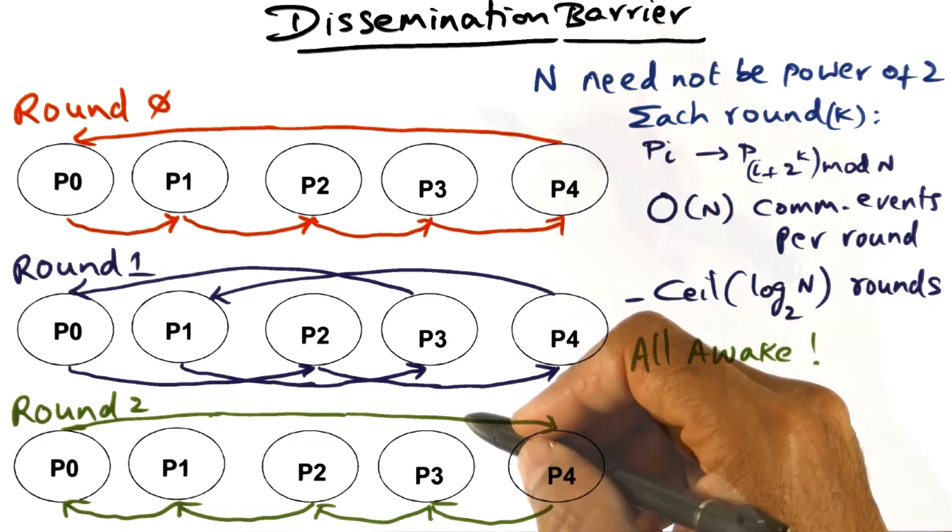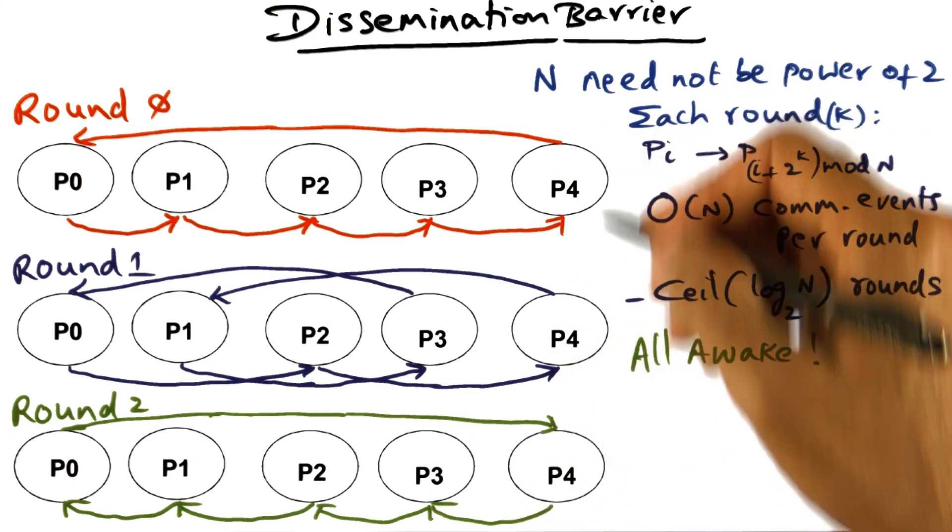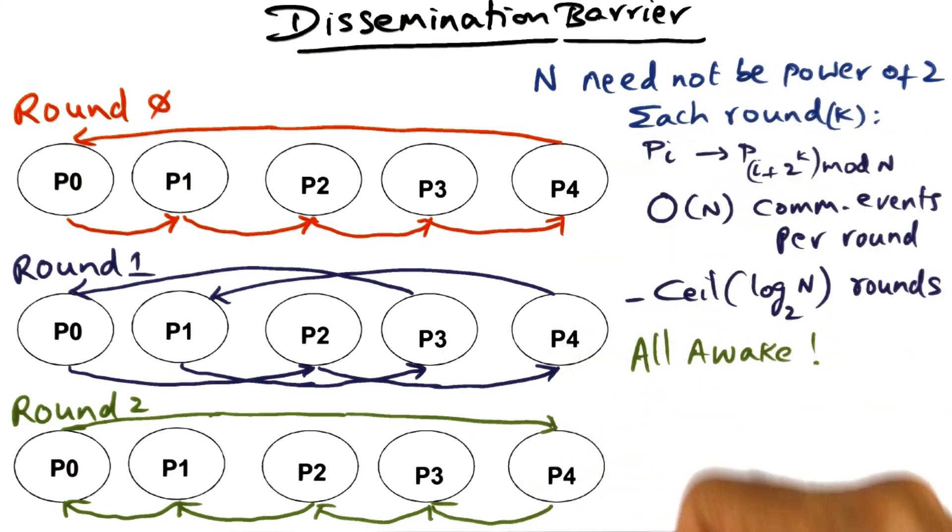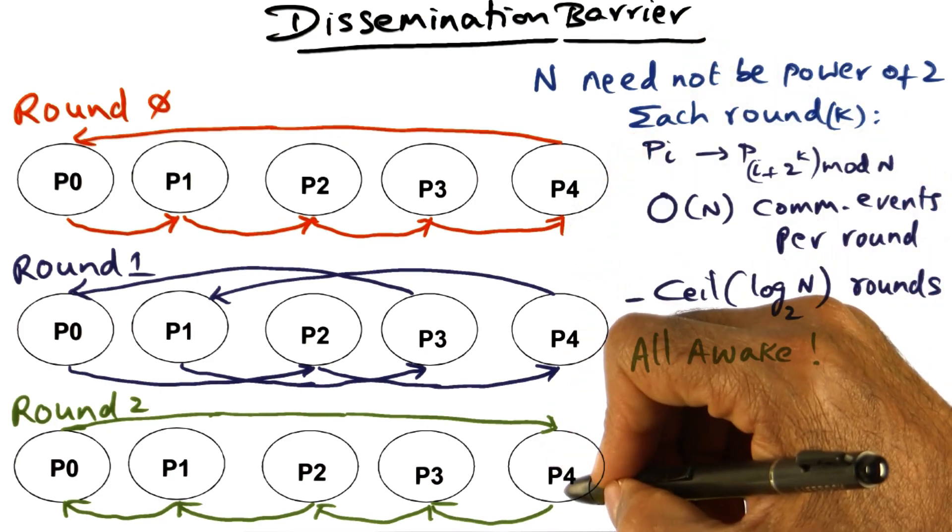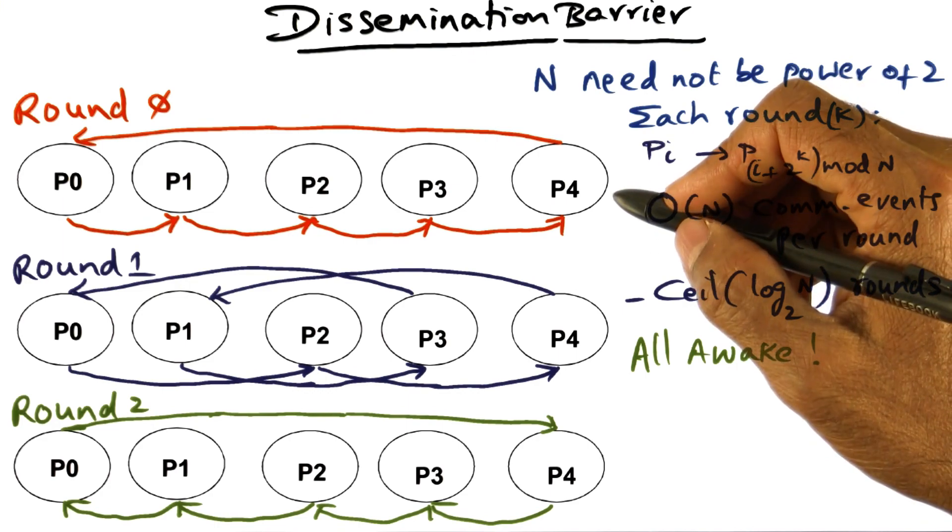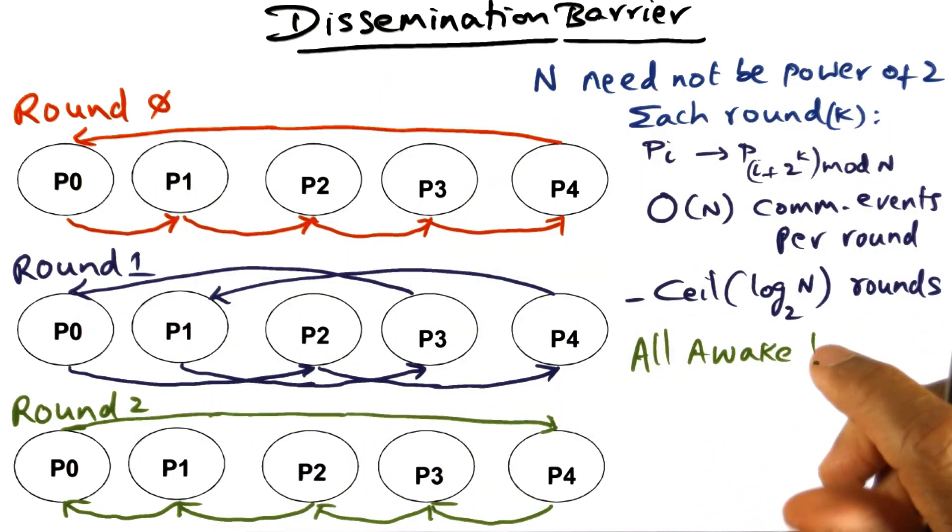And as always, in every one of these barrier algorithms, you have to do sense reversal. Once this barrier is complete, everybody is going on to the next phase of the computation. And when they go to the next phase of the computation, they have to make sure that the barrier that they arrive at is the next barrier. So you need sense reversal at the end of every barrier algorithm.